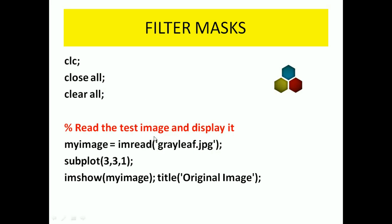Next, here we have to read the test image. For reading the test image, I am using the imread MATLAB command, which reads that particular image from a specified folder. So my_image = imread('grayleaf.jpg'). Here, my_image is a variable — you can use any type of variable. Next, subplot(3,3,1) — that is three rows, three columns, and the position of this image is first. We are using the MATLAB command imshow to show the output image, and the title of this image is given as 'original image'.